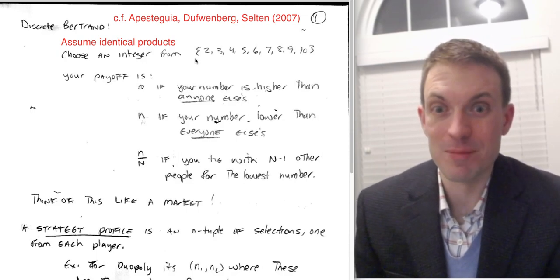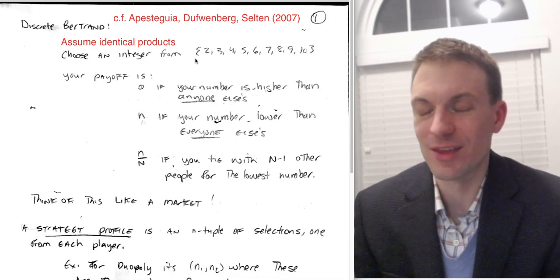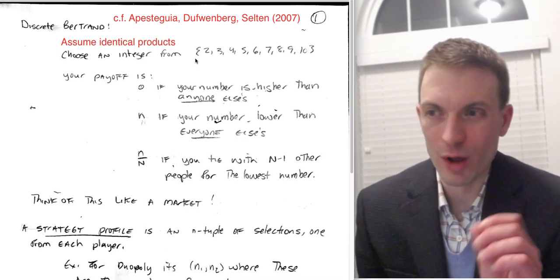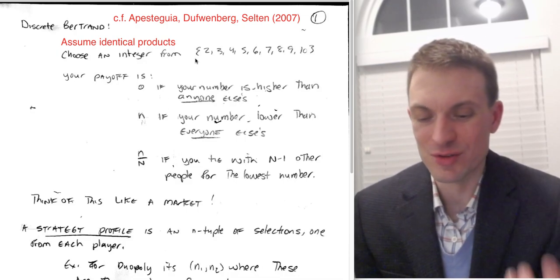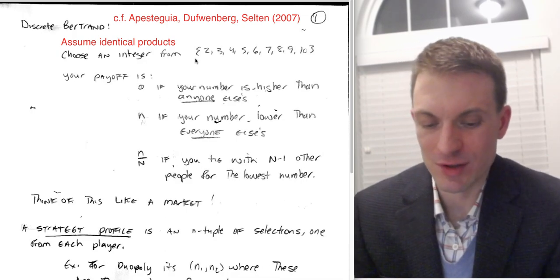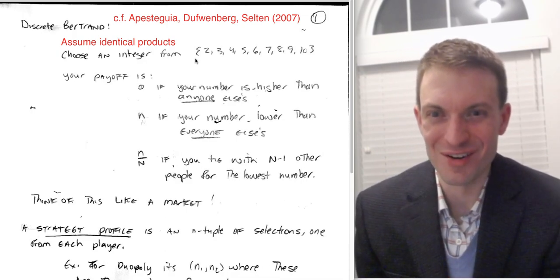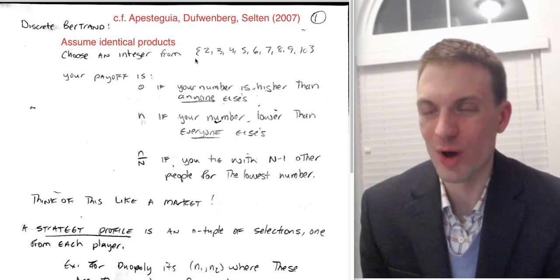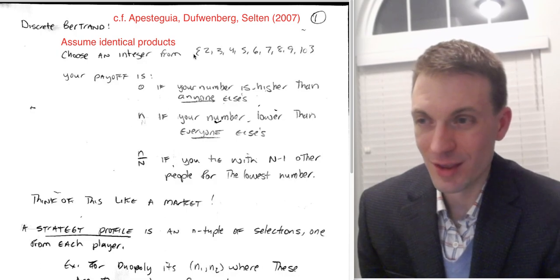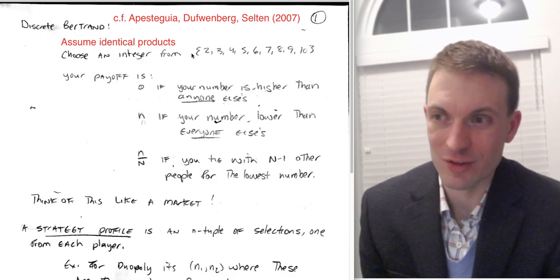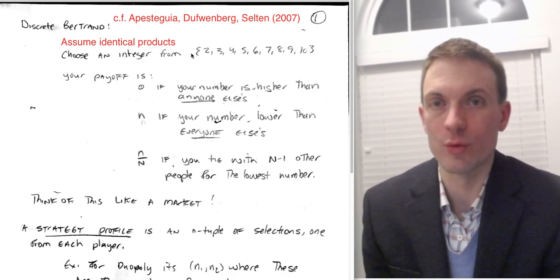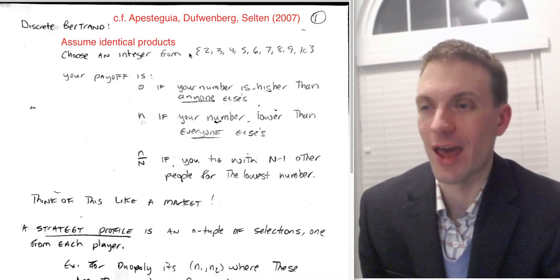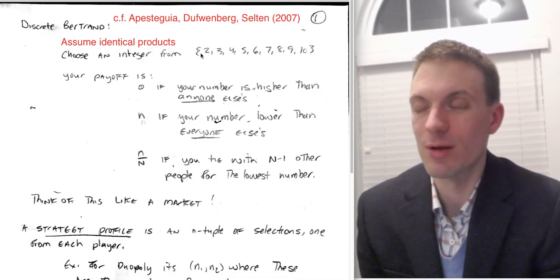Well, at 1-1, you'd tie and you'd each get payoffs of a half. If you went lower, if you went to 0, you'd capture the market, but you'd have 0. If you went higher, you'd get 0. So 1-1 would be a Nash equilibrium in this set if we allowed the set 0-1. And actually 0-0 would as well for the same reason as 2 as a Nash equilibrium here.